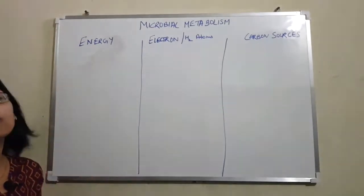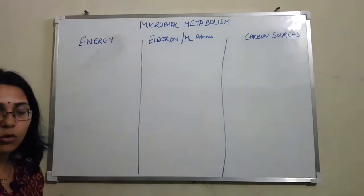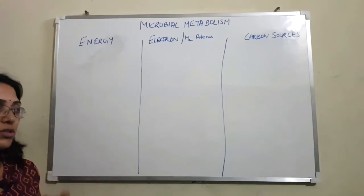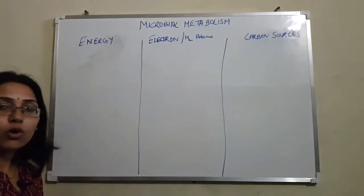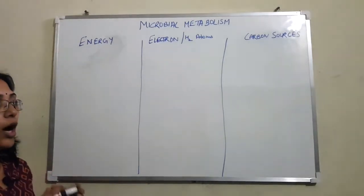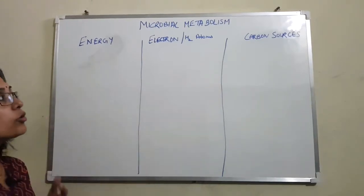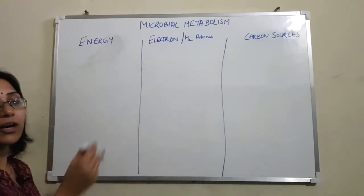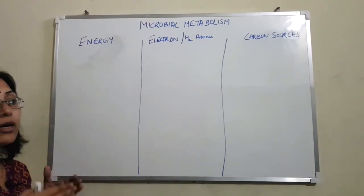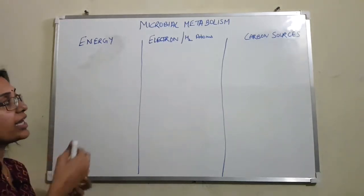When we talk about microbial metabolism, we are talking about how microorganisms are going to obtain or acquire their energy, or how they are going to acquire their nutrients like carbon sources, which are required for their growth and reproduction — the basic necessities for them to live. We also look at how they are obtaining electrons and hydrogen atoms which are required for different metabolic and biochemical pathways, and which are required to conserve or utilize this energy.